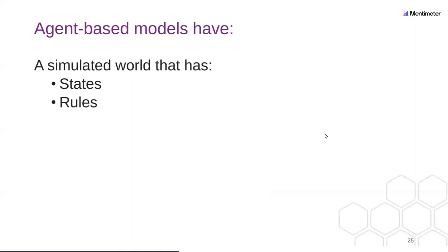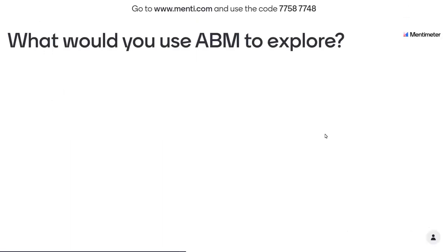Now let me talk a bit more about agent-based models. They have a simulated world that has both states and rules. What, in theory, would you use an agent-based model to explore? The answers coming in include media discourse, COVID spread, social systems, pandemics, racism, voting spreads, inequality, adoption of cycling, spread of ideas in a population, humanitarian systems, obesity, disease modeling, pupil progress in education, friendships, collaborations, complex system dynamics, migration, survival, how policies affect social phenomena, aquatech and farming, collective action, conflict, information dissemination, and even riots.